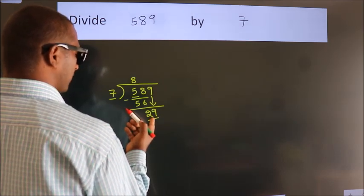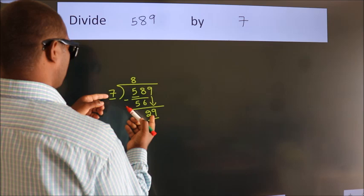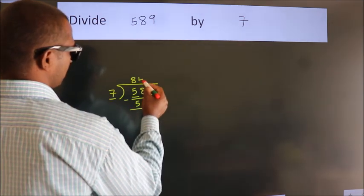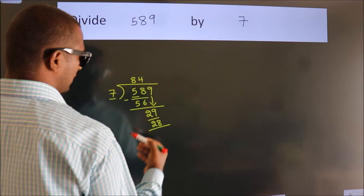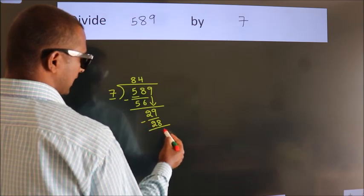A number close to 29 in the 7 table is 7 times 4, which is 28. Now we subtract and get 1.